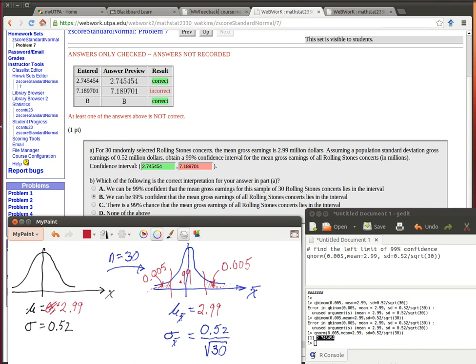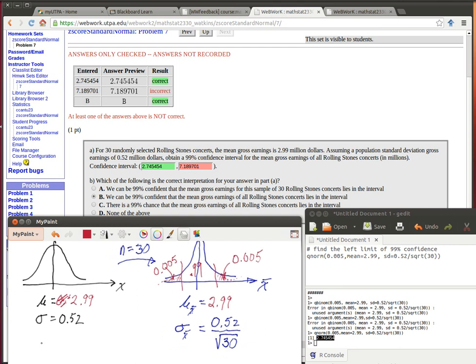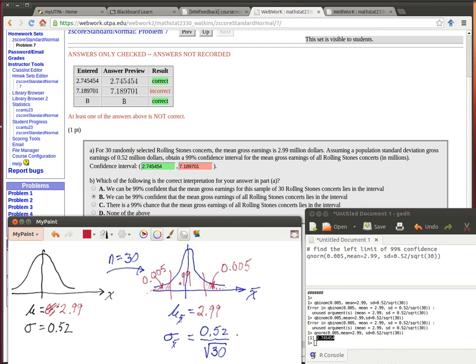So the central limit theorem says that this mean and this mean will be the same, and that this standard deviation will tell us what this standard deviation is. It will just be the population standard deviation divided by the square root of the sample size.